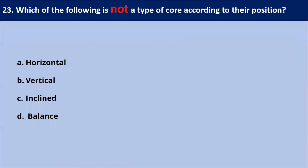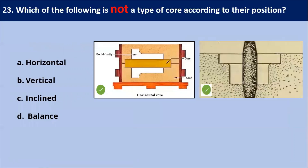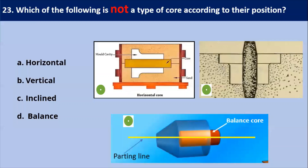Next question: which of the following is not a type of core according to position? As shown in this diagram, there is a horizontal core, a vertical core, and a balance core — all are types of core. However, inclined core is not a type of core. Our answer is C.